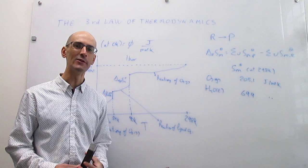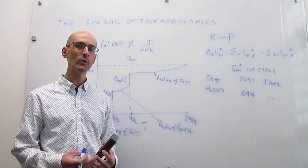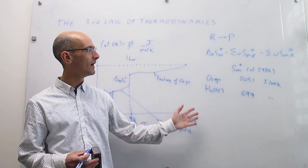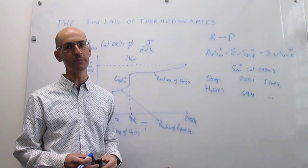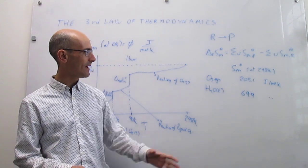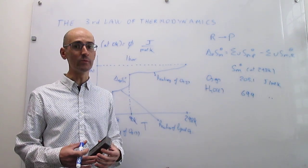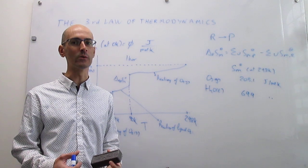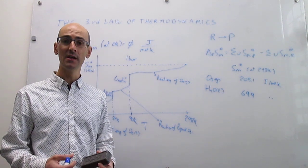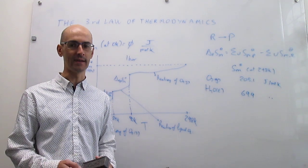In summary, in this video we have introduced the third law of thermodynamics, and then we have used it to see how we can obtain tables of absolute molar entropies at 298 Kelvin. These absolute molar entropies at 298 Kelvin are going to be extremely useful for calculating changes in entropy in chemical reactions, and we are going to see an illustration of that in the next video.